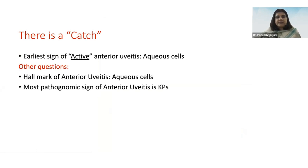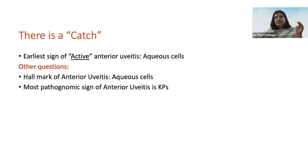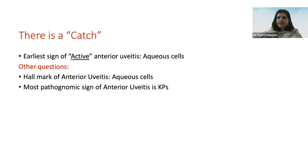Important nuances: if the question asks for the earliest sign of active anterior uveitis, the answer becomes aqueous cells. If asked for the hallmark of anterior uveitis, the answer is again aqueous cells, as these are leaking out from blood vessels due to breakdown of the blood-aqueous barrier. If asked for the most pathognomonic sign of anterior uveitis, the answer is KPs, because KPs are not formed in any other condition.